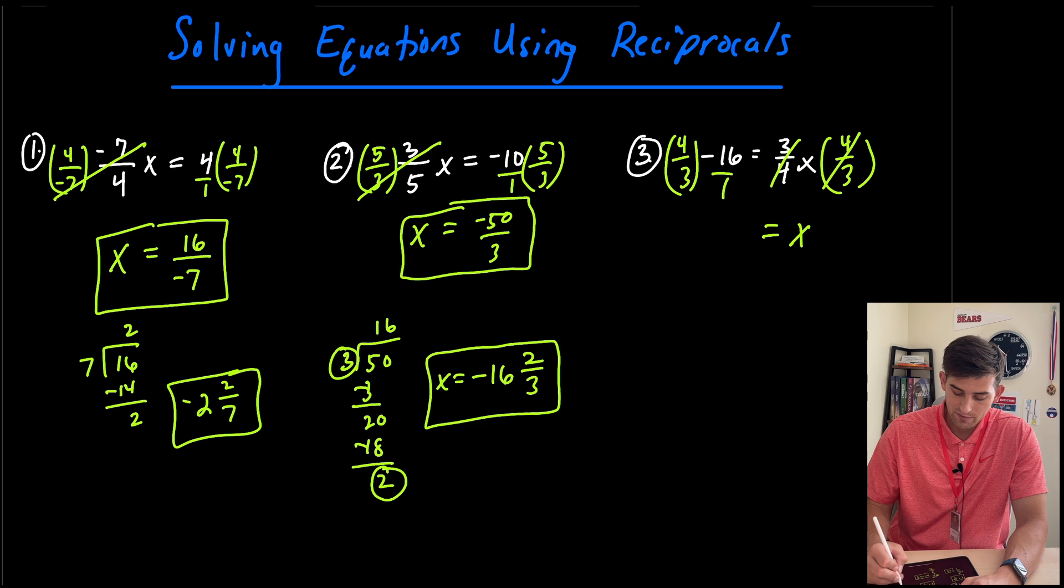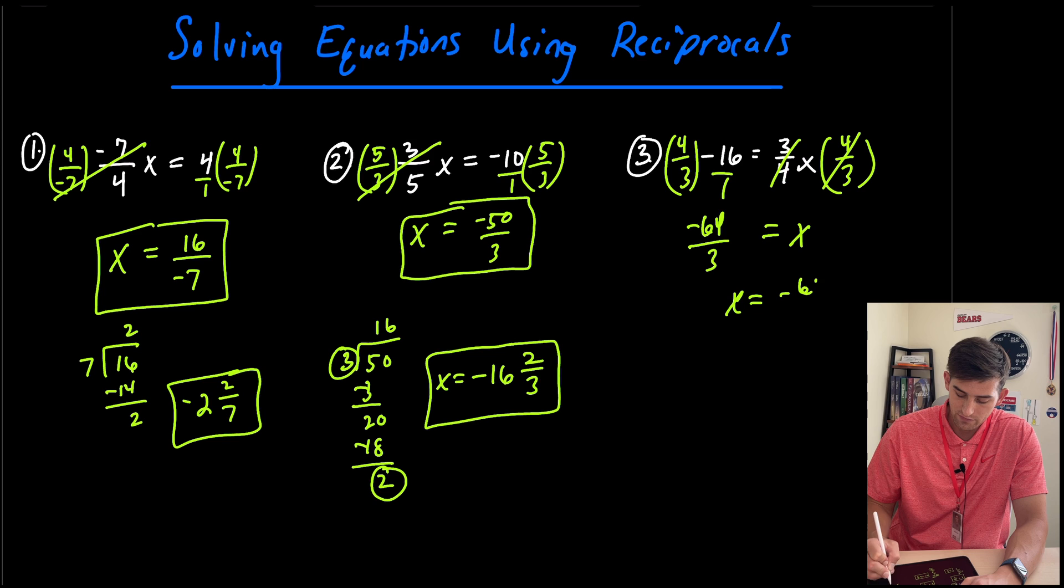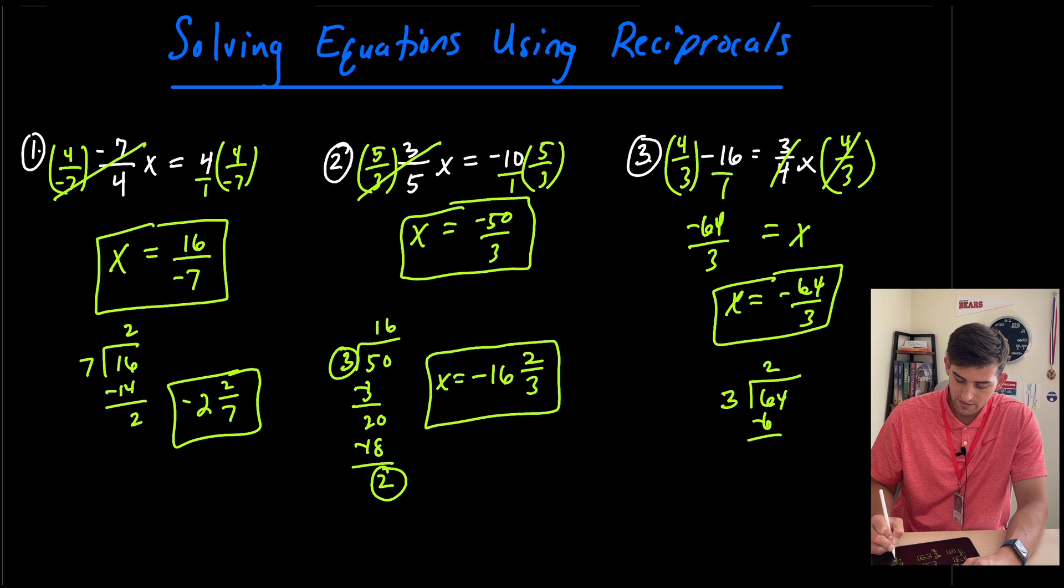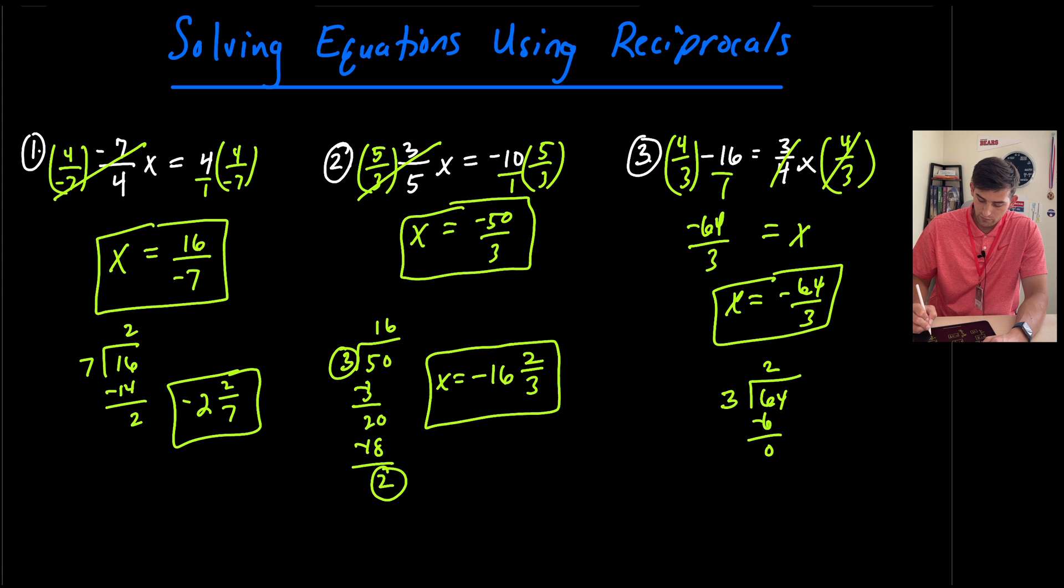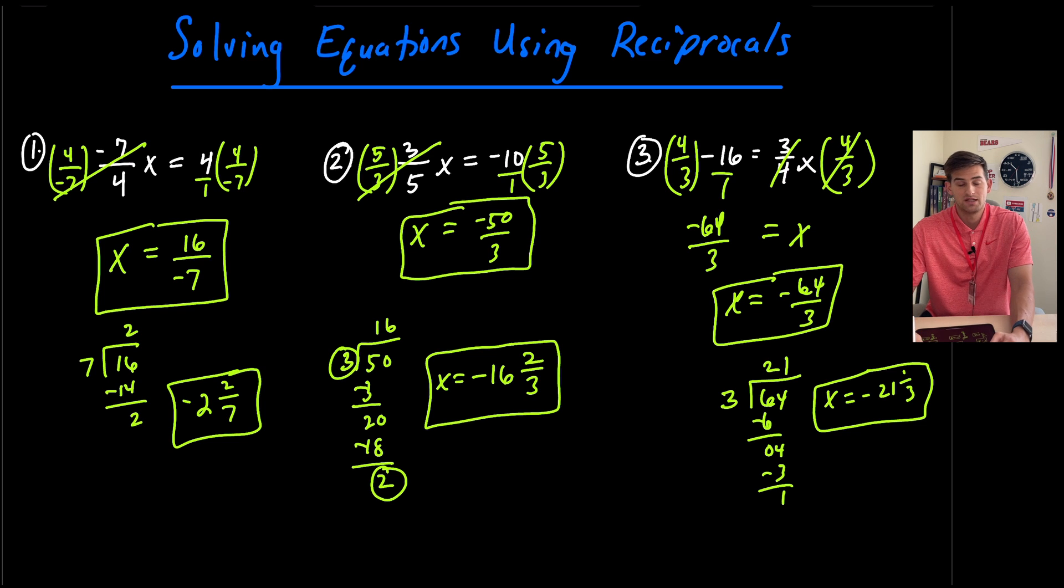And then negative 16 times four would be negative 64, and one times three would be three. So we could leave this as x equals negative 64 over three, or as a mixed number, we could divide 64 divided by three, so that'd be two times, and we bring down our four, and that'll go in once, and we're left with one third. So we could say x is equal to negative 21 and one third, if we want to write that as a mixed number. So those are some examples of how we could solve equations using reciprocals.